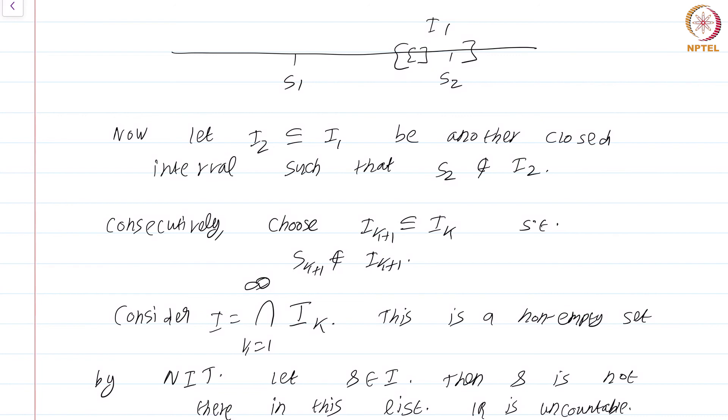The set of real numbers is an explicit example of a set that is uncountable, and this also shows that the number of real numbers that are there exceeds the number of rational numbers in some sense because the rational numbers is a countable set. This is a course on real analysis and you just watched a module on the uncountability of R.